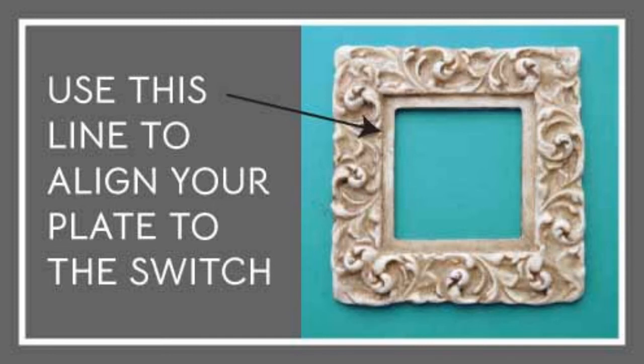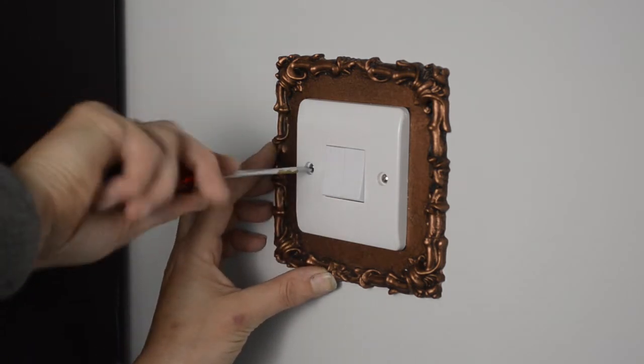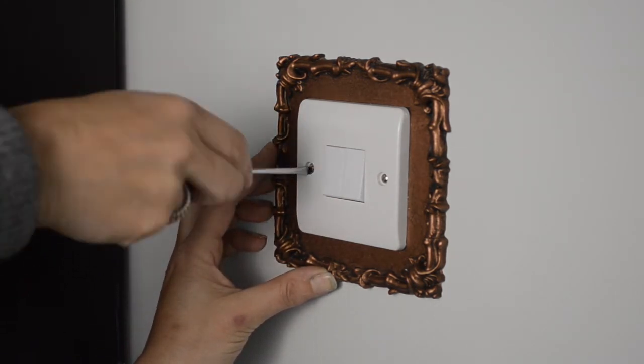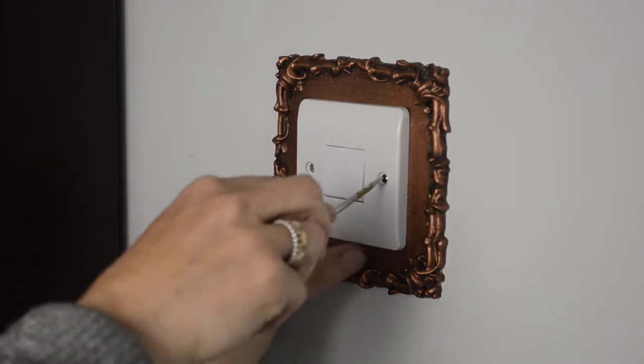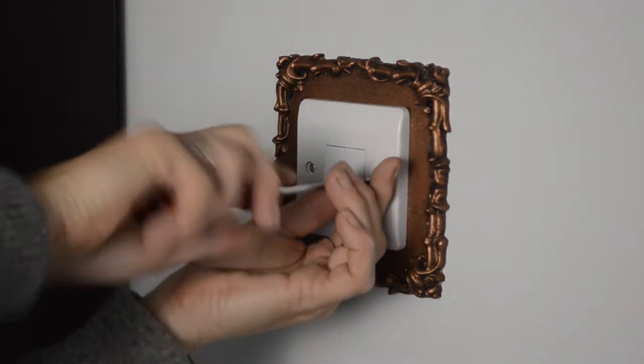So now I'm just going to tighten it up all the way and as you can see the switch plate is holding this nicely against the wall. So I don't need any kind of glue for this one at all.